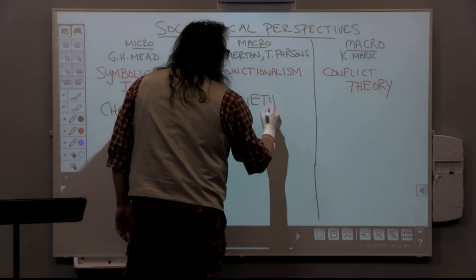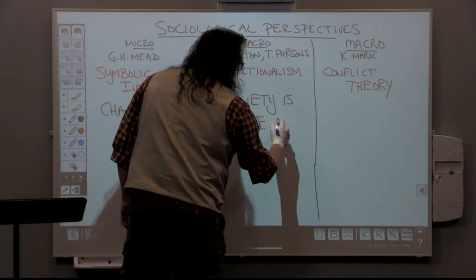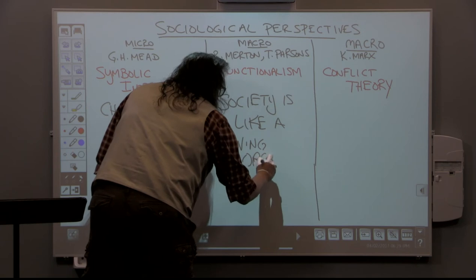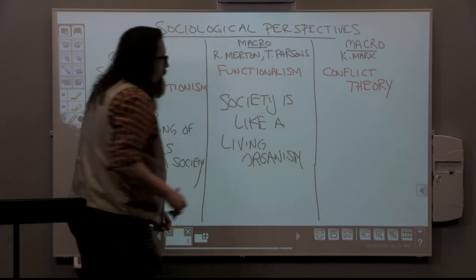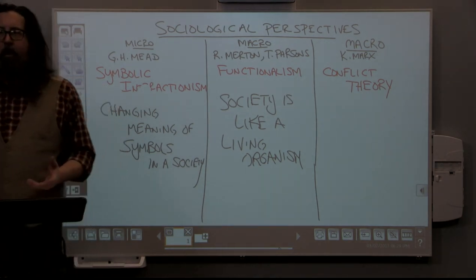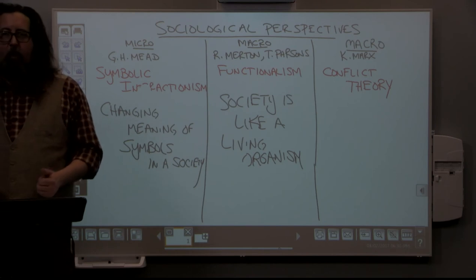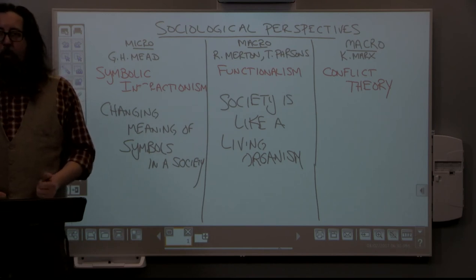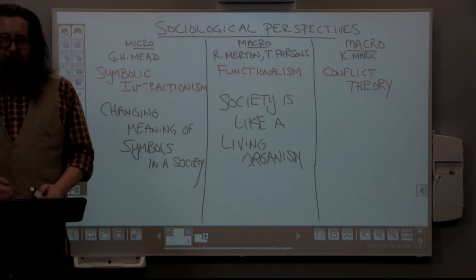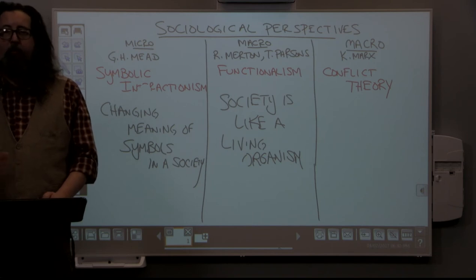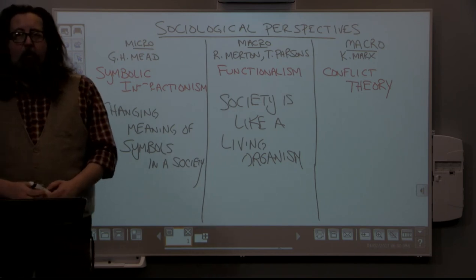Society is like a living organism, with all its parts working together. Two key things to look at when examining these parts are structure — how the part fits into the greater whole — and function — what it does. For example, the heart is part of the circulatory system and its function is to pump blood. Similarly, education's function is to pass on information, and its structure is its relationship to all the other parts of society.